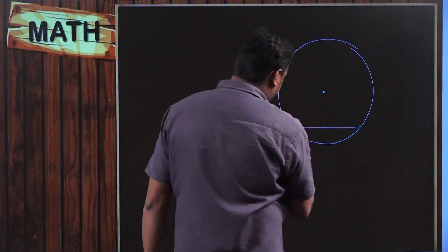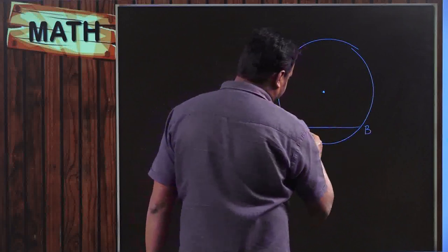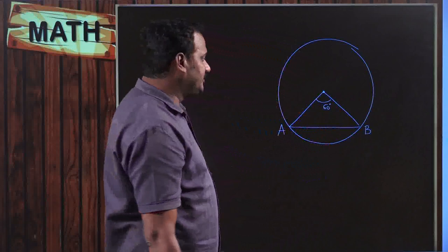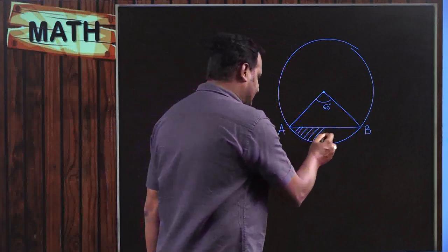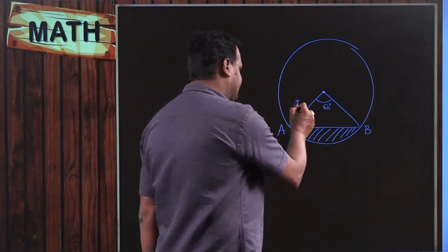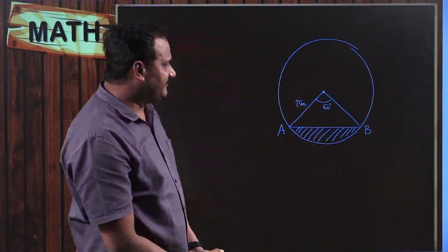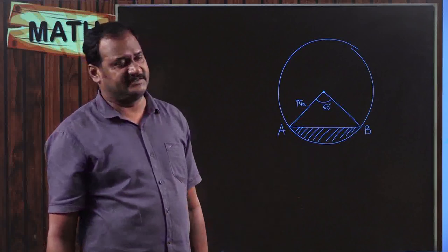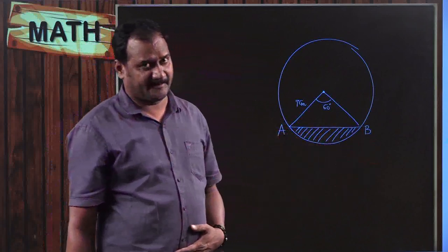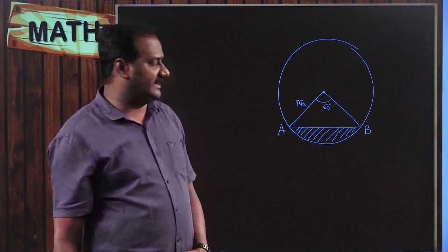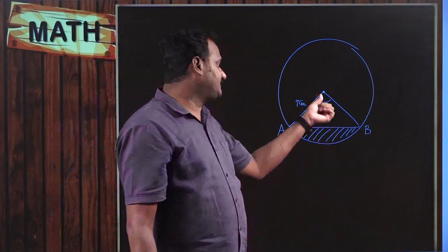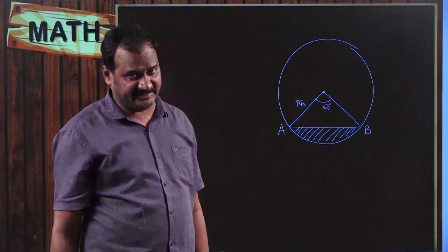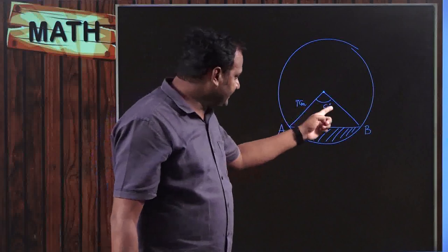For example, suppose there is a circle, and AB is a chord making an angle of 60° at the center, and the radius is 7 cm. You need to find the area of the minor segment. To find the area of the minor segment, it is not easy to calculate directly — you need to find the area of the sector, for which there is a ready-made formula when the angle is given.